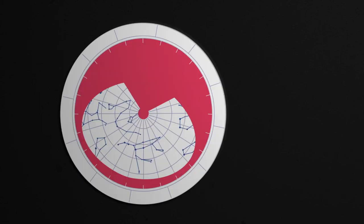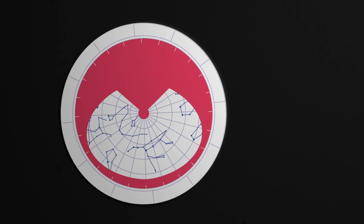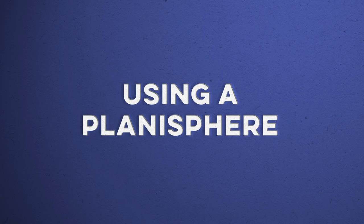Another option is to buy or make a planisphere. A planisphere is a star map made of two pieces. One has a star map on the bottom, and on top is a rotating window that shows you what stars are visible when you're stargazing.